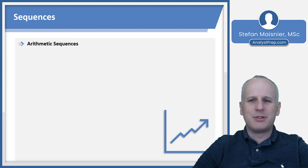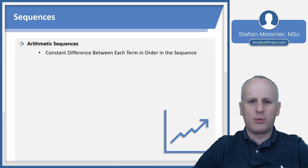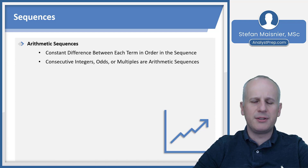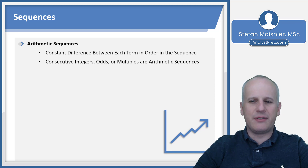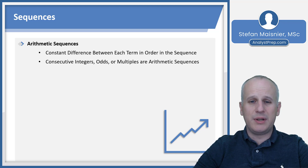There are some special instances of sequences, starting with arithmetic sequences. An arithmetic sequence is when there's a constant difference between each term in the order of a sequence. Things such as consecutive integers, consecutive odds, and consecutive multiples are each arithmetic sequences. For consecutive integers — 1, 2, 3, 4, 5, 6, 7 — there's a constant difference of 1 between each of those integers.